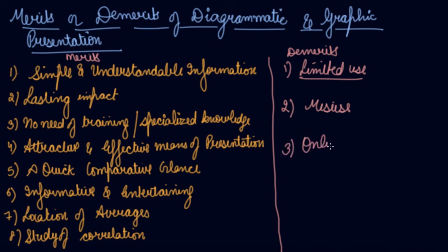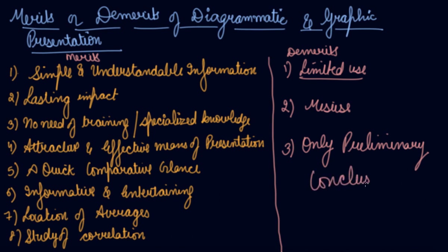Third, diagrams and graphs offer only preliminary conclusions. It may not be very easy to arrive at a final conclusion after seeing a diagram. Multiple information presented in the form of diagrams and graphs may offer only preliminary conclusions.